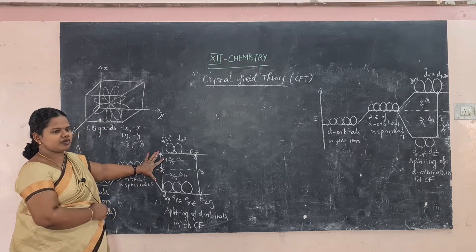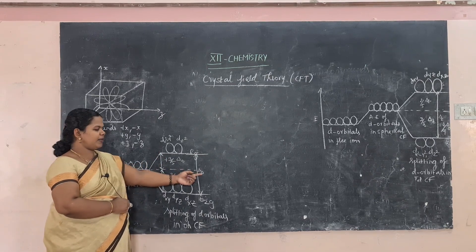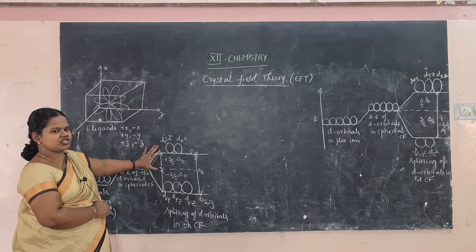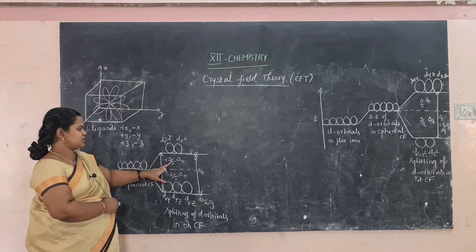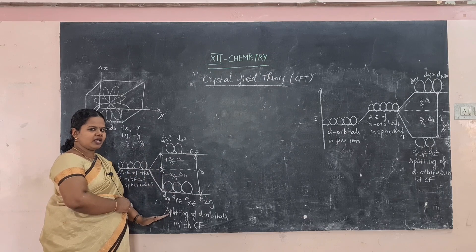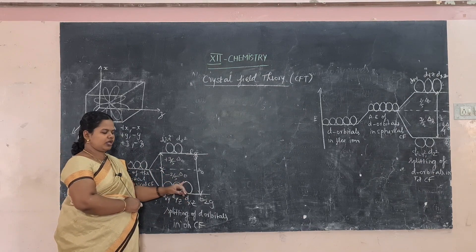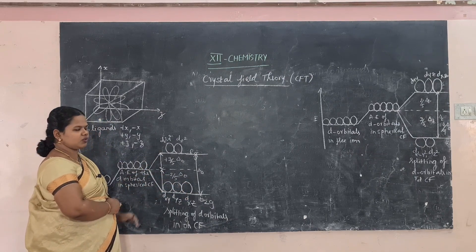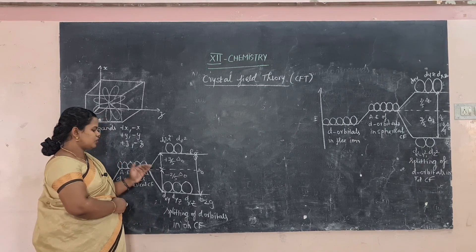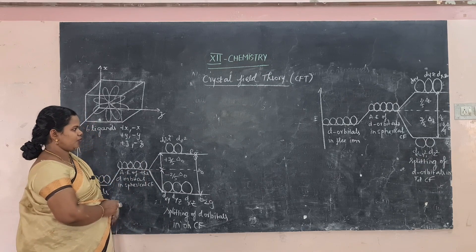The difference between the energy of t2g and eg is known as the barycenter, delta_o. The eg level requires more energy: +3/5 delta_o. After excitation it emits back, corresponding to -2/5 delta_o for the t2g level. This is the splitting of d-orbitals in the octahedral crystal field.